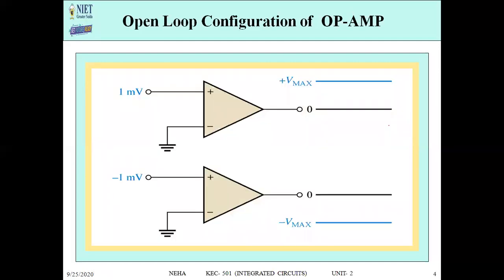In open loop configuration there is no feedback. If a positive supply is provided on the non-inverting terminal, then the output will be plus VCC, or plus VMAX — it cannot exceed the supply. Similarly, if a minus millivolt voltage is provided at the inverting input, then the output will saturate at minus VE. This is the behavior of an open loop configuration.